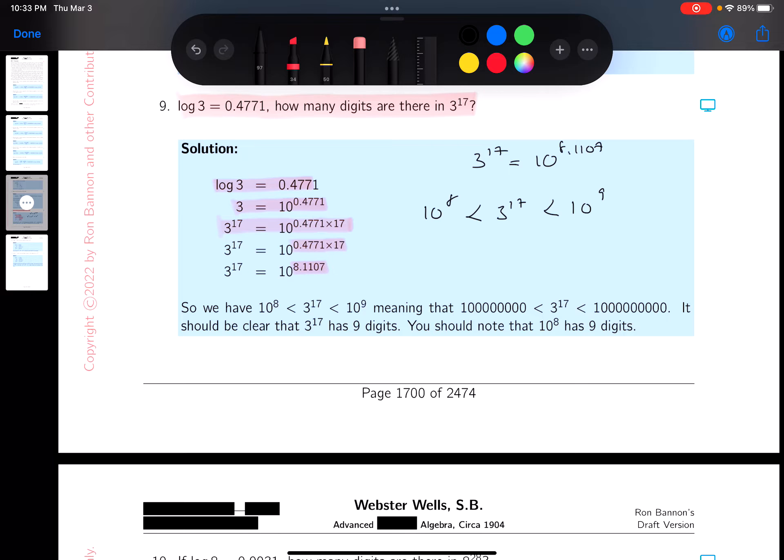But it should be clear that, looking at it, 3 to the 17th, it should be clear that it has nine digits in it. Now, why is that? Let's write this down.